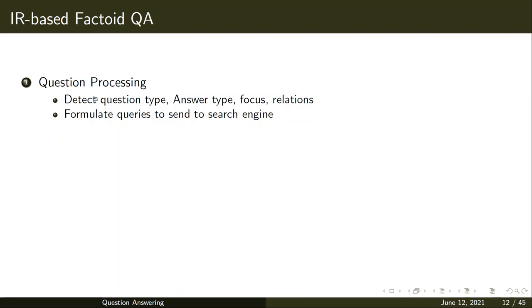Question processing contains several sub-steps: detecting the question type, answer type, focus, and relations. The focus is which word is most important in the question. The relation refers to relationships between entities — for example, 'director of a movie' or 'headquarters of a company.' These are the key elements extracted during question processing.